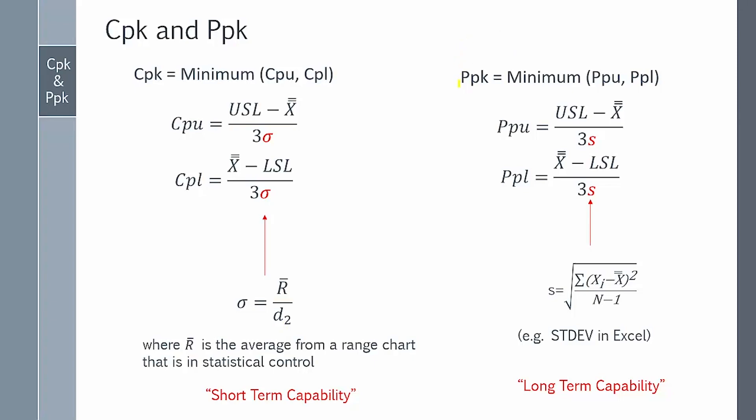PPK, which is another process capability index, has essentially the same equations as CPK. The only difference is the Greek letter sigma is replaced by the letter S. S is simply the calculated standard deviation. It's taking all the data and calculating the standard deviation, just like you'd use in Excel if you use the function STDEV. PPK is sometimes called the long-term capability because it includes all the data in the calculation of S.